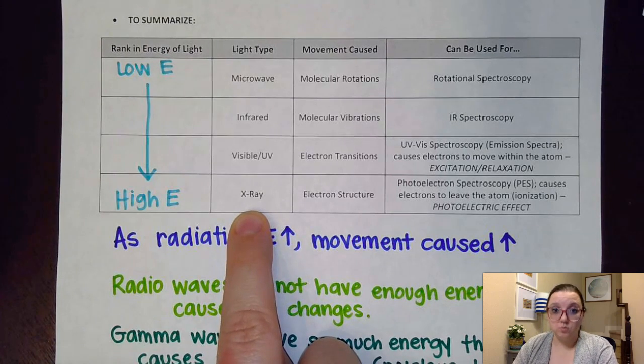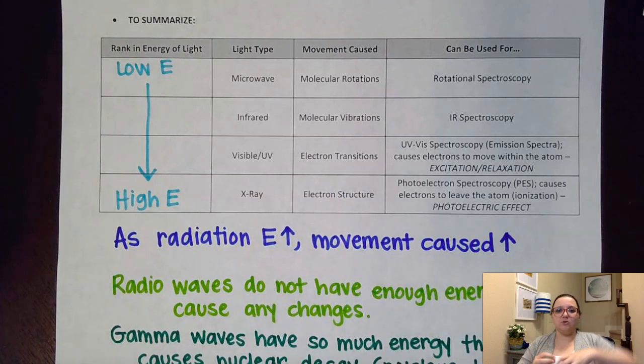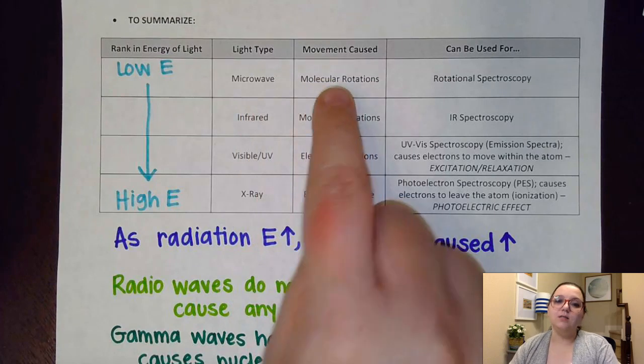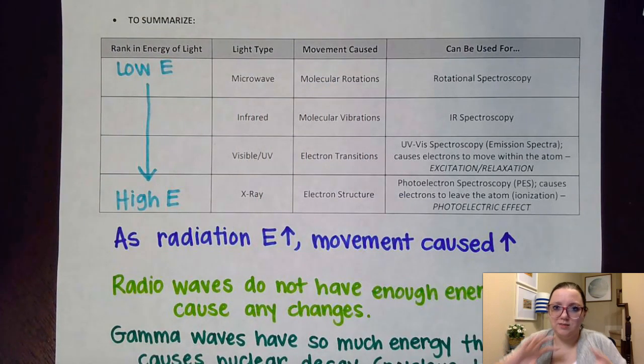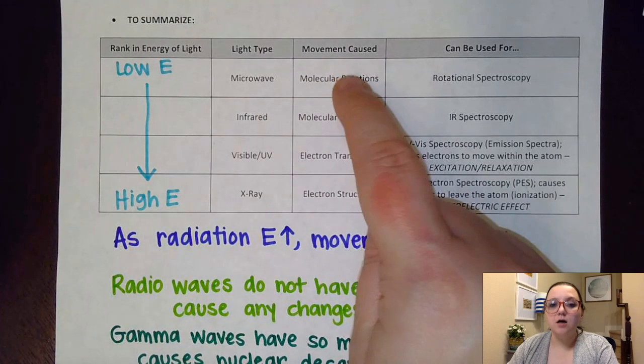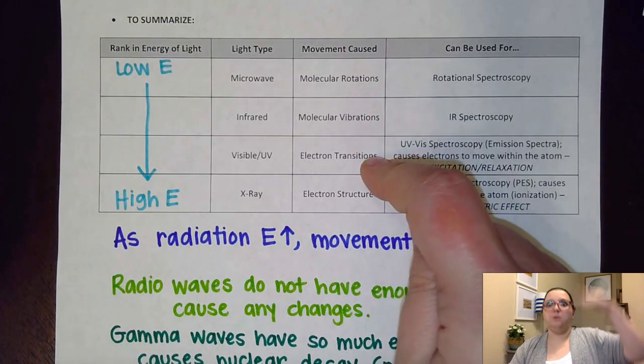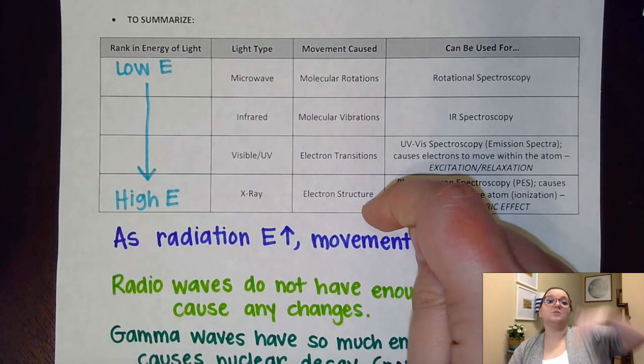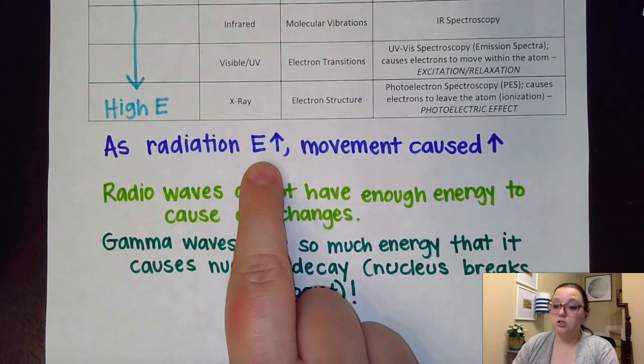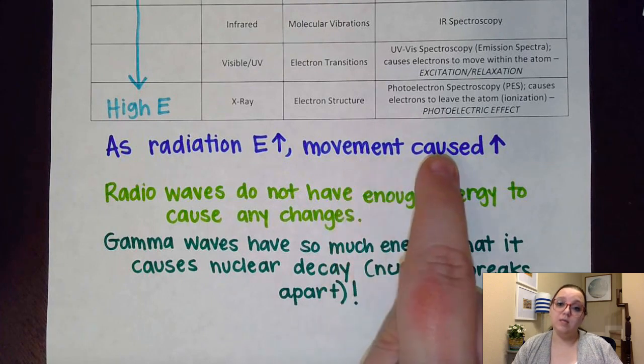X-ray had the most energy out of those light types. And if you notice, it caused the most internal change to happen. It caused electrons to totally leave the atom at that point. However, the lowest energy thing, the microwaves, all it did was cause molecules to rotate in place. So it really didn't change much of anything. So every time I upped that energy amount, I caused more and more change to happen. I transitioned from just rotating to vibrating to jumping electrons to all of a sudden, now electrons are leaving. So I got more and more dramatic with my movement each time. So again, as the radiation energy increases, as the light type has an increase in energy, the movement that we cause would increase as well.